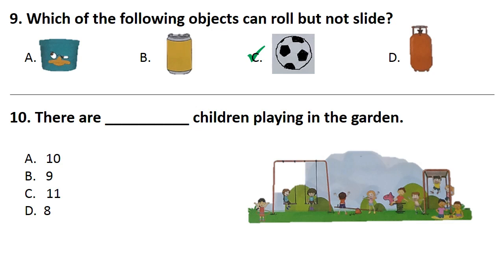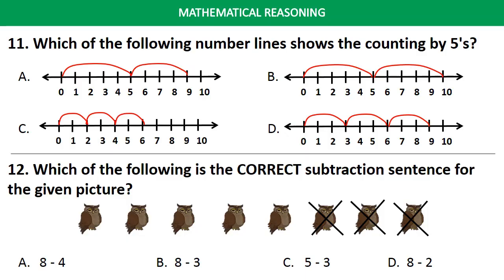Next question. There are children playing in the garden. Answer is Option C. That is 11. Now Mathematical reasoning section.